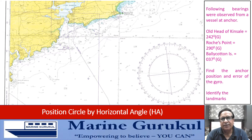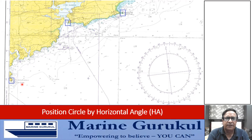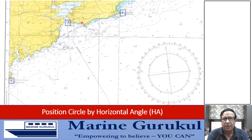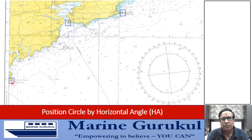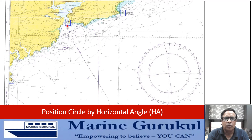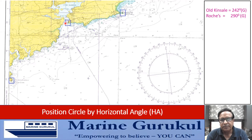We first identify these landmarks on the chart: Old Head of Kinsale, Roches Point, and Bellycotton Island. We then make pairs. With three objects, three pairs are possible, but to keep plotting simple and avoid crisscrossing, it is advised to pair the middle object with each of the other two. Roches Point is the middle object, so we form two pairs: Old Head of Kinsale and Roches Point, and Roches Point and Bellycotton Island.